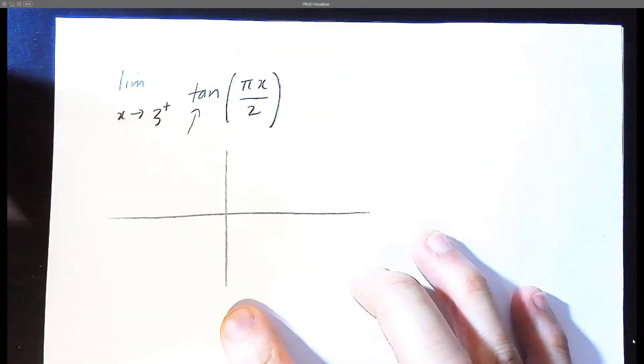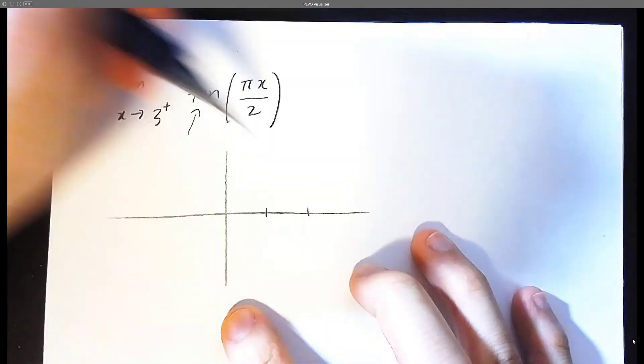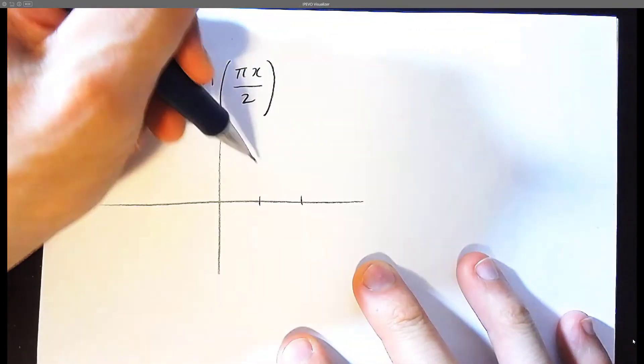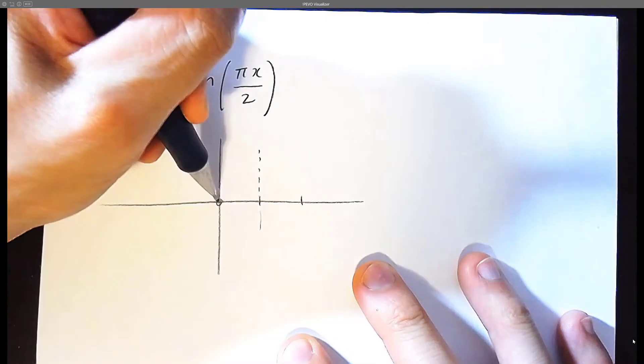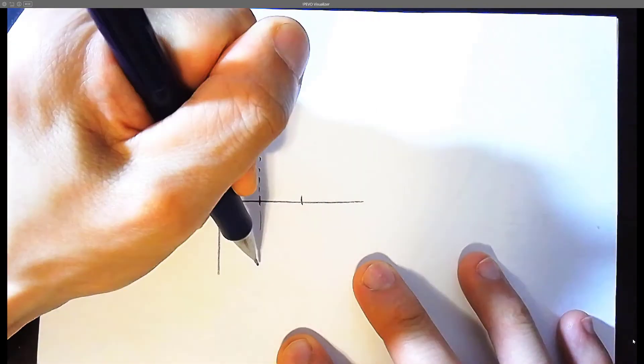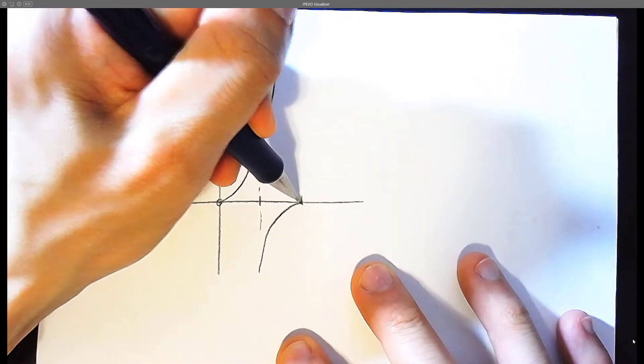Now we know that tan goes up, starting from zero, curves up, and it continues on and hits zero again.